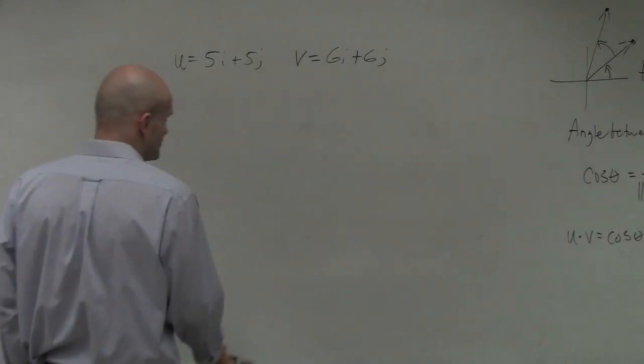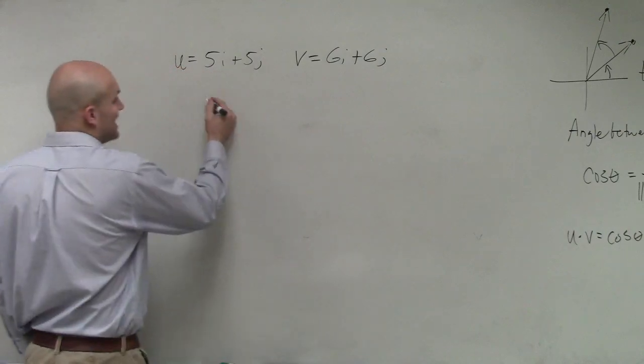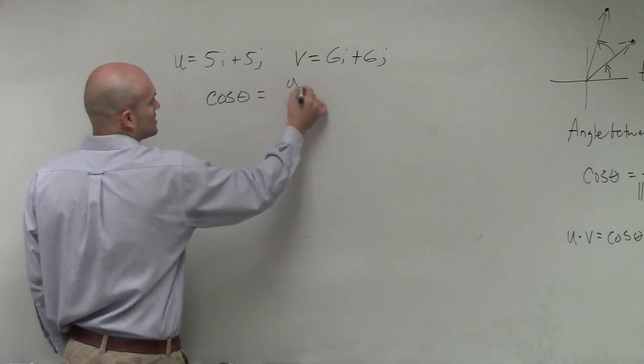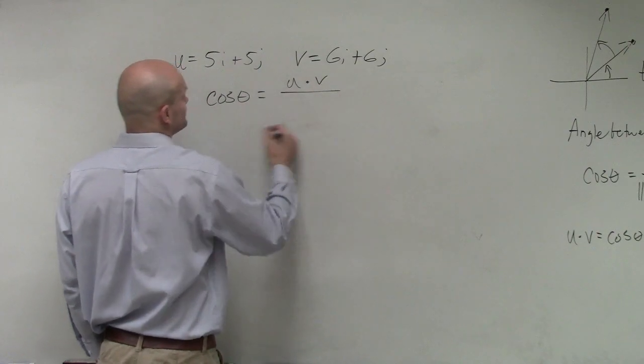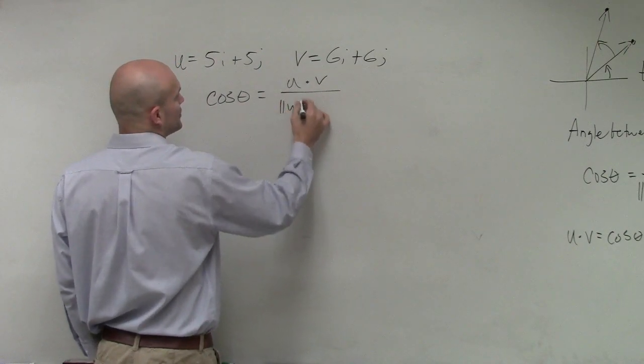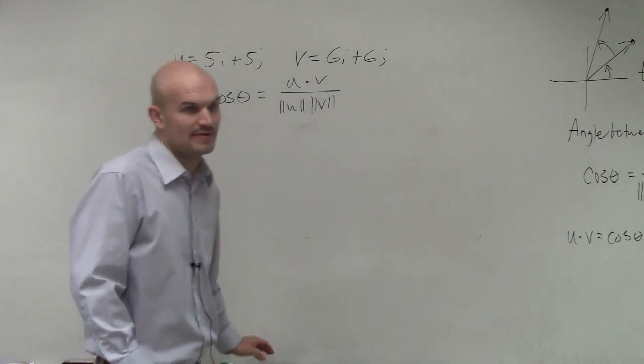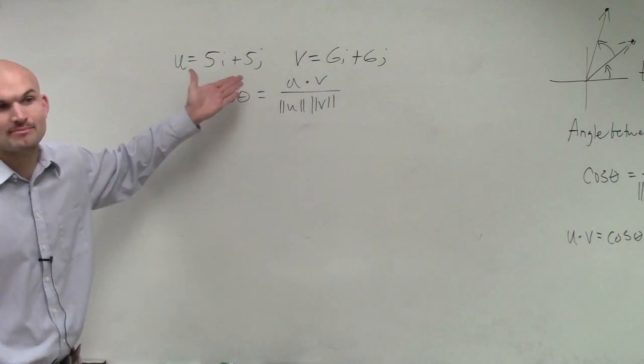The angle between these two vectors. So remember, the angle between these two vectors is going to be cosine of theta equals the dot product of the magnitude of u times the magnitude of v. So I'm going to work on this.